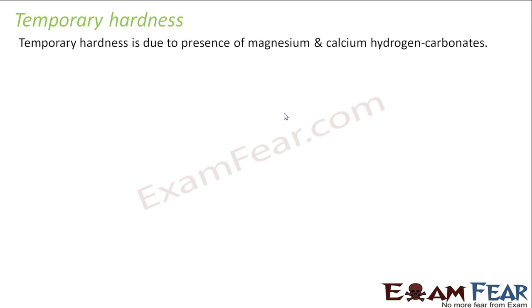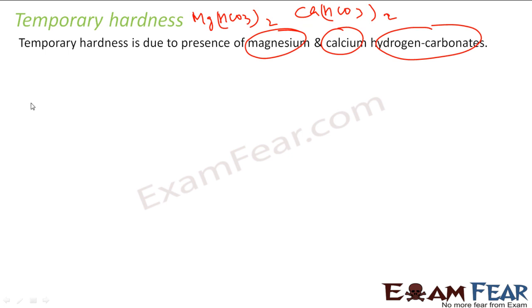In temporary hardness, we have the presence of calcium and magnesium hydrogen carbonate. We have either calcium hydrogen carbonate or magnesium hydrogen carbonate. These are the two culprits which make water temporarily hard. Why is it temporary? We will just discuss.